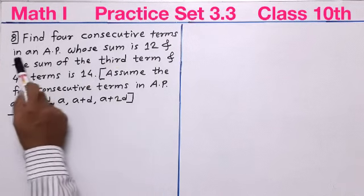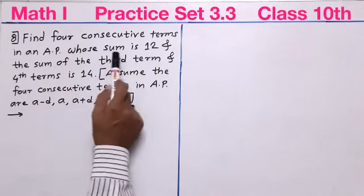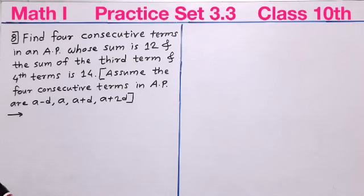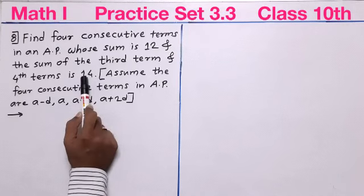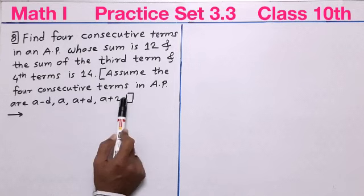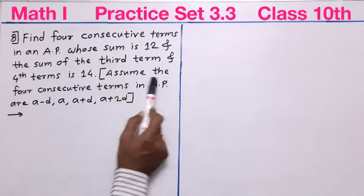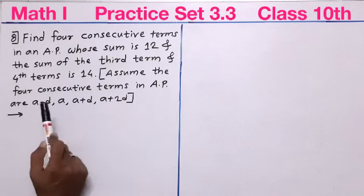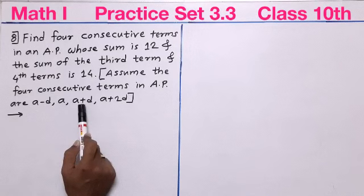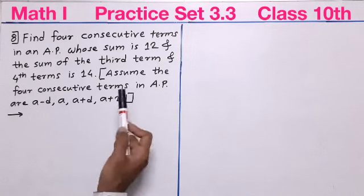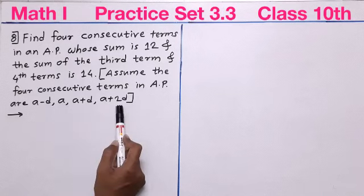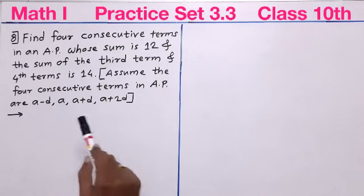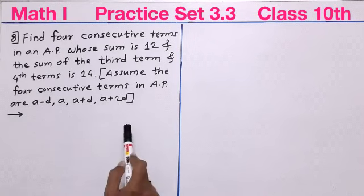Find four consecutive terms in an AP whose sum is 12 and the sum of the third and fourth terms is 14. The hint says: assume the four consecutive terms in an AP are A minus D, A, A plus D, and A plus 2D. Since the hint is given, we directly use the conditions.